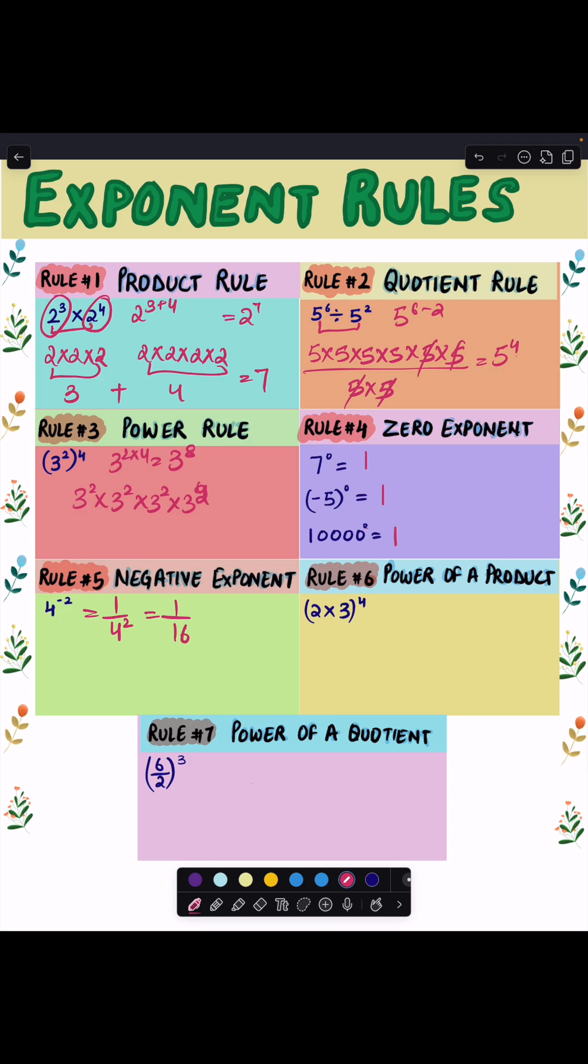when we calculate it further. Next rule is the power of a product rule, which says when the power is applied to a product, give that power to each factor. So (2×3) raised to power 4 becomes 2 raised to power 4 times 3 raised to power 4, and 16 times 81 when we calculate it further.